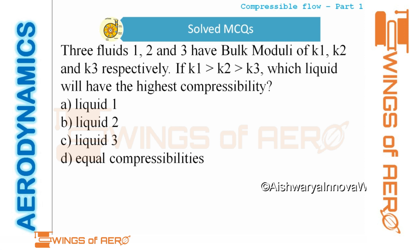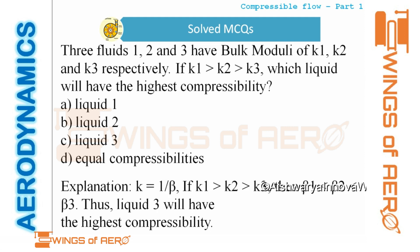MCQ 6: Three fluids have bulk moduli K₁ > K₂ > K₃. Which liquid has the highest compressibility? Since compressibility is the inverse of bulk modulus, the fluid with the lowest bulk modulus has the highest compressibility. That is K₃, so liquid three — answer C — is correct.